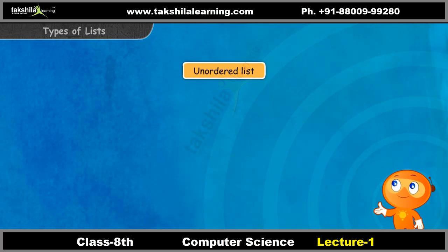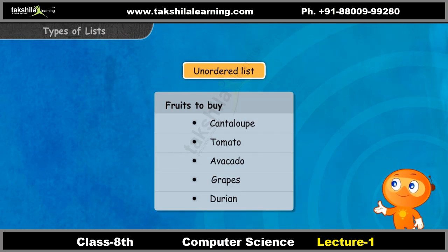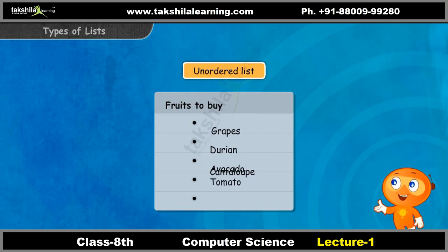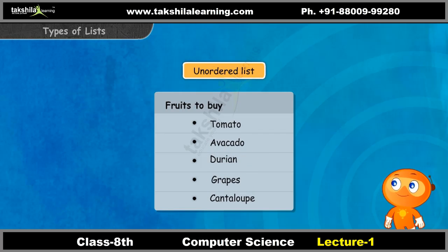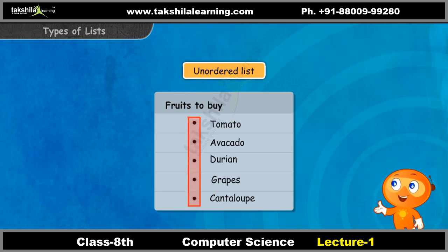Let us first look at unordered lists. Unordered lists are lists with related items but where the order is not important. For example, you decide to buy a list of fruits at the grocery, but there is no necessity for the list to be in a specific order. The items in this list will not be listed using numbers or alphabetical order. By default, the solid bullet is used as the list element.